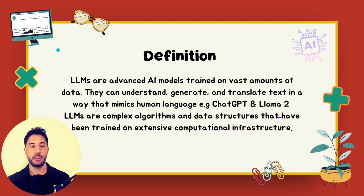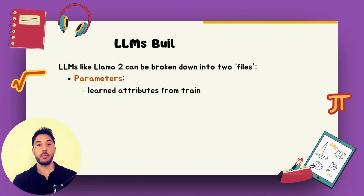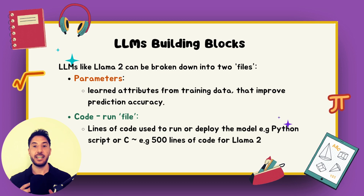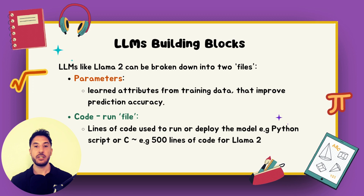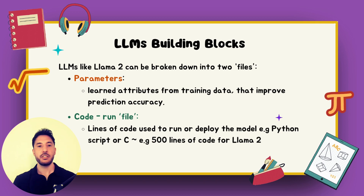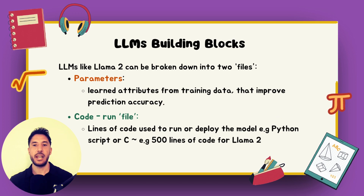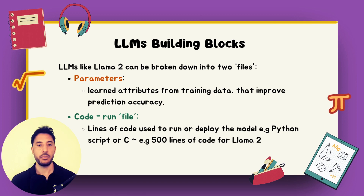Large language models can be broken down into two elements: parameters and run files. Parameters are the learned attributes from training data that improve prediction accuracy — they are the magic behind large language models. Run files are basically lines of code used to run or deploy the model; it could be a Python script or simple C code — for example, about 500 lines of code for LLaMA 2.